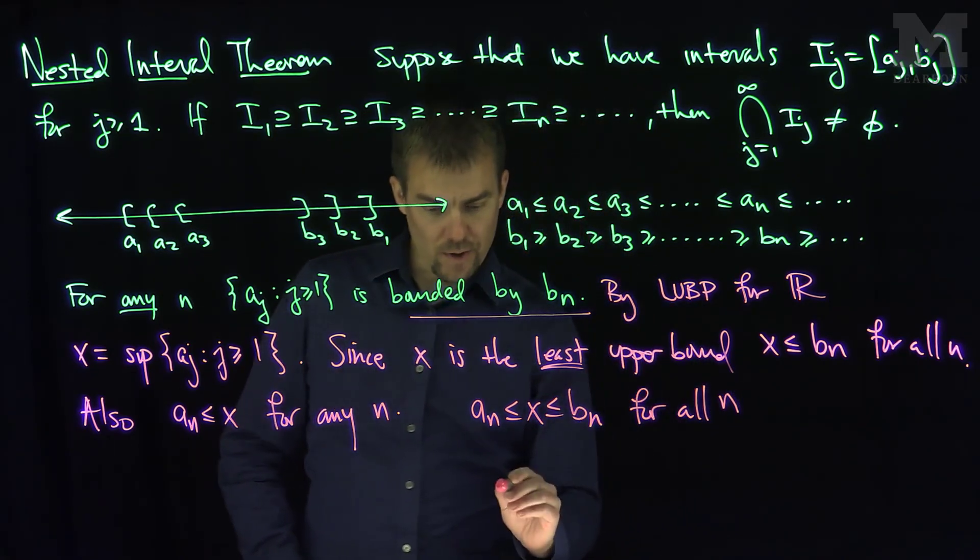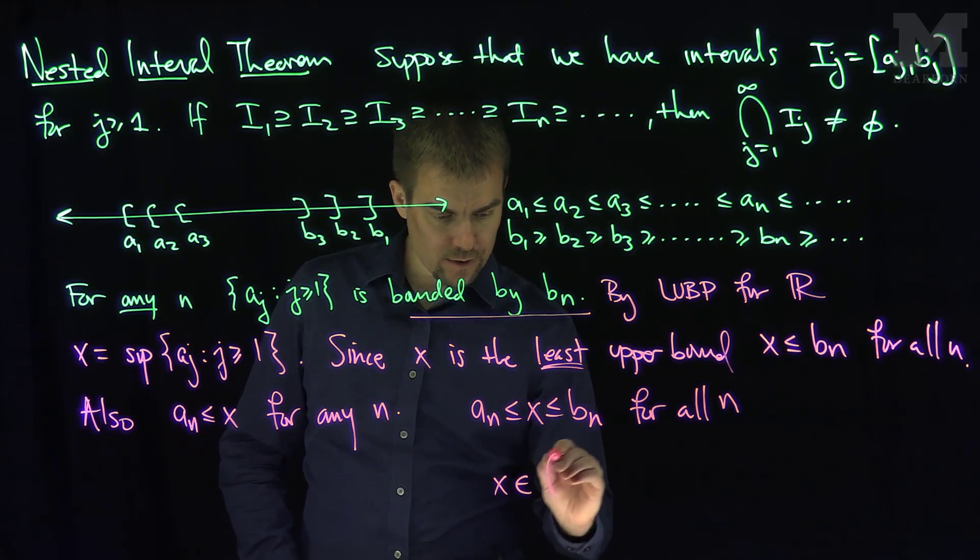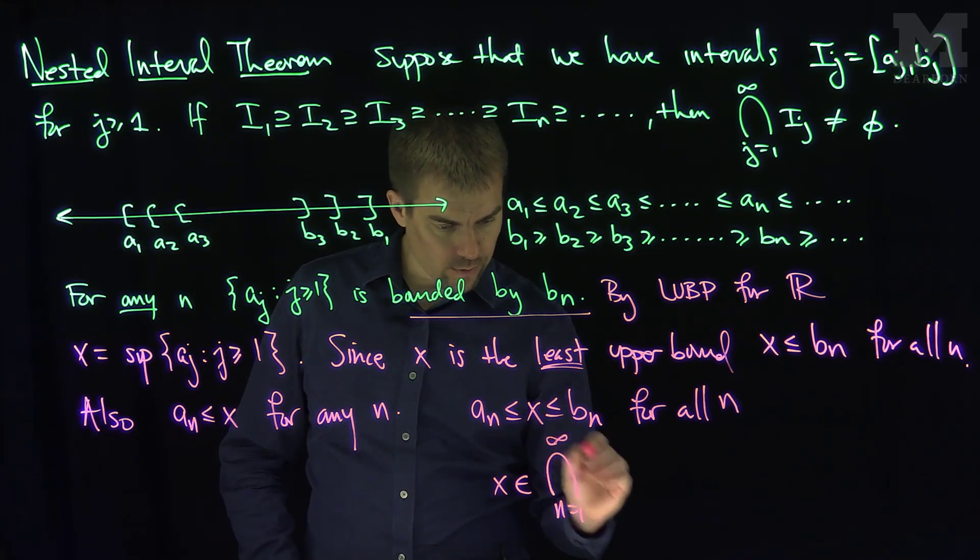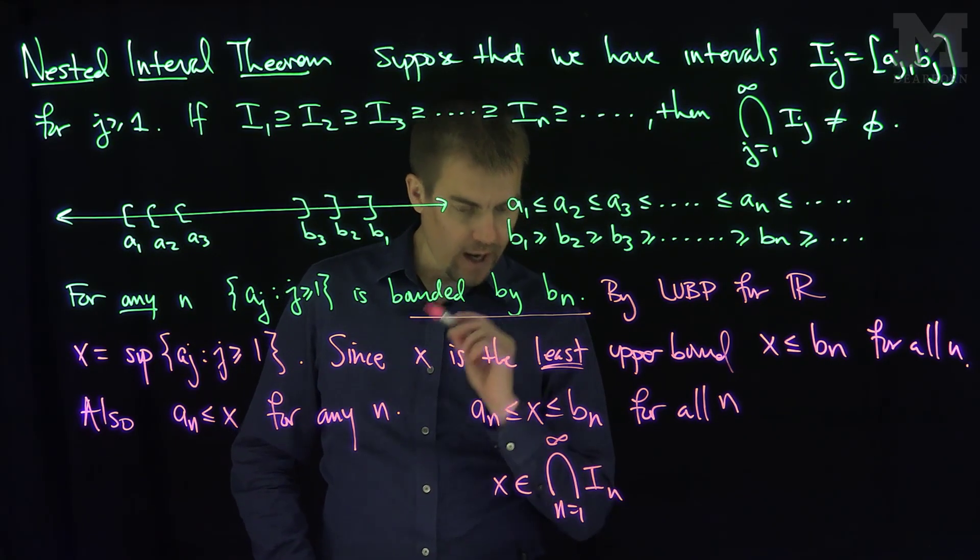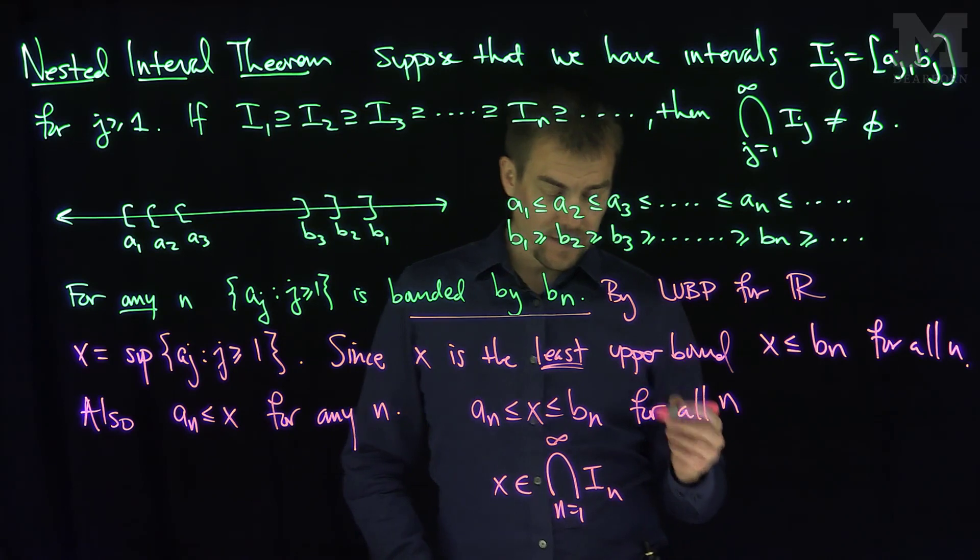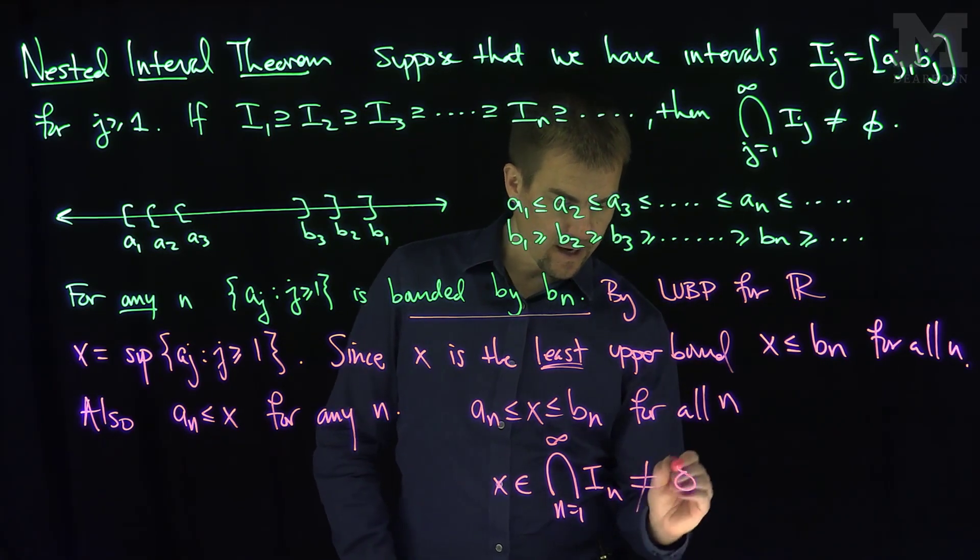And that exactly says what? That exactly says that x is in the intersection, in every single one, n goes from one to infinity of these intervals In. And that shows that, since x exists, this is not an empty set.